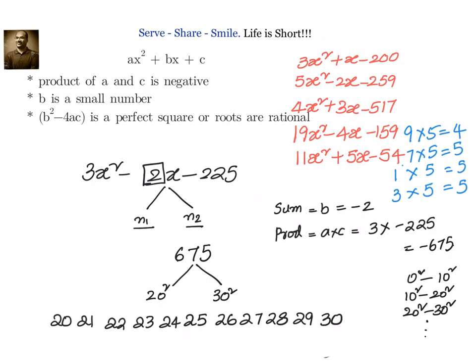But we also have a condition that the difference is 2. That means we can rule out where the difference is not 2. This is ruled out, this is ruled out. Left out are only 2.